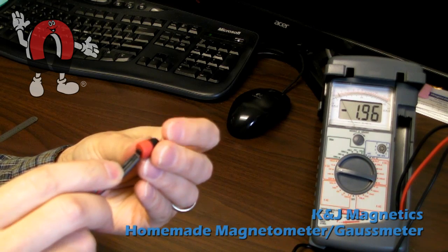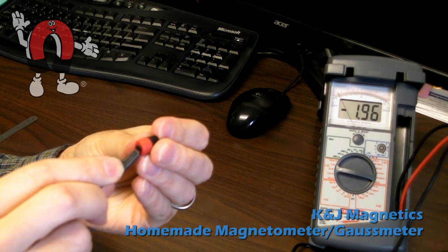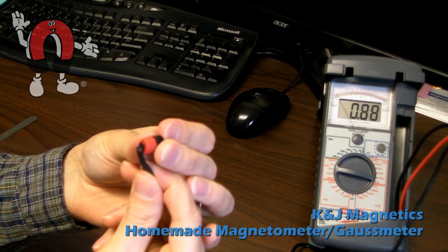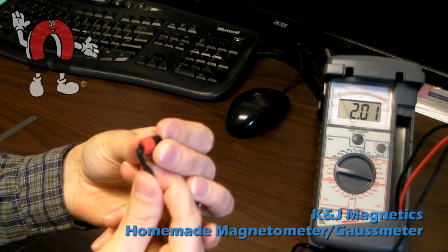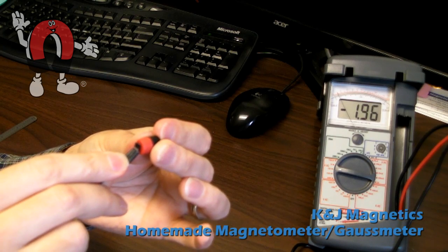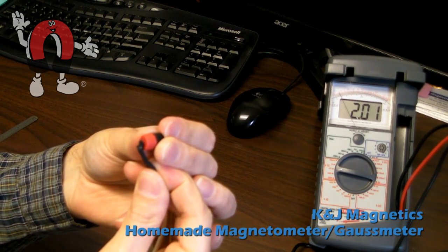Also note that the direction of your sensor matters too, because if I take the sensor and turn it around, you get the opposite direction. Negative. Positive.